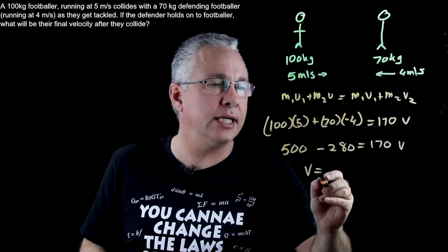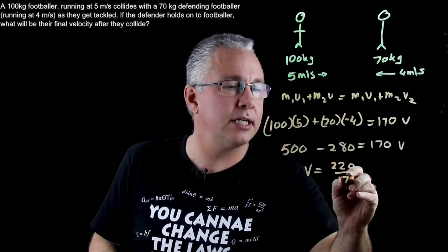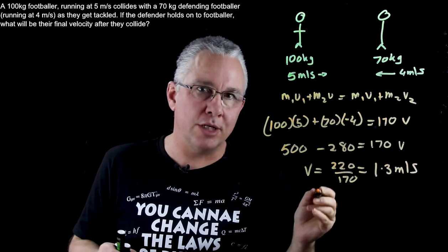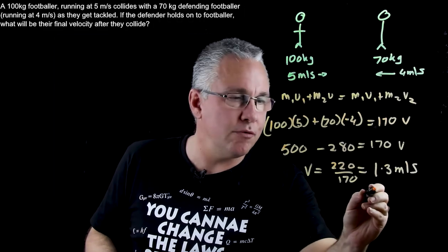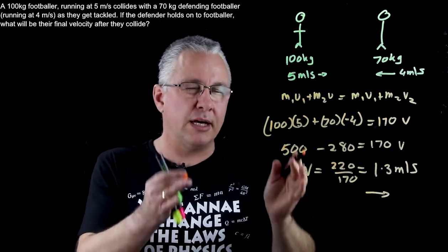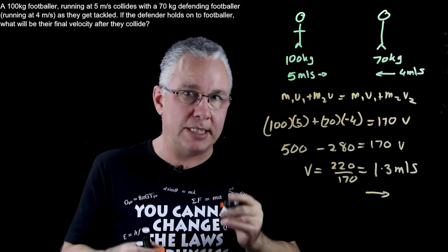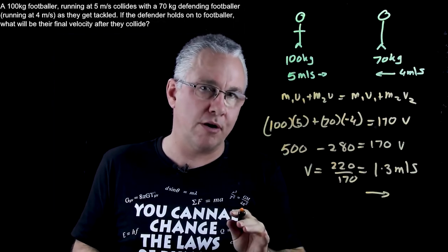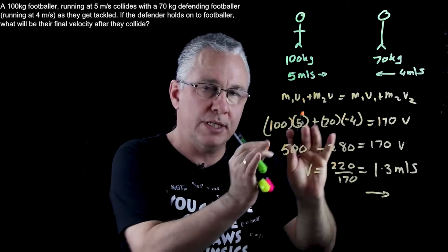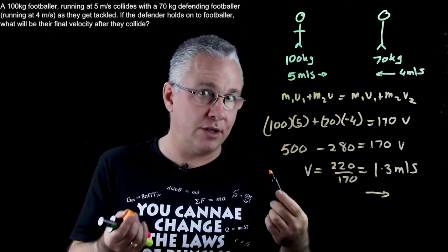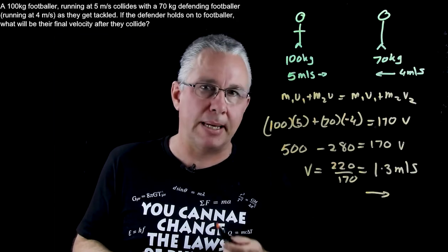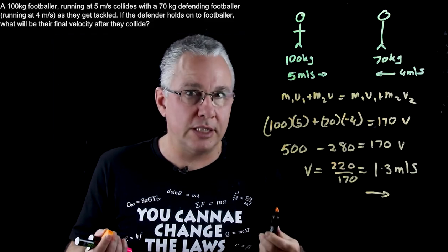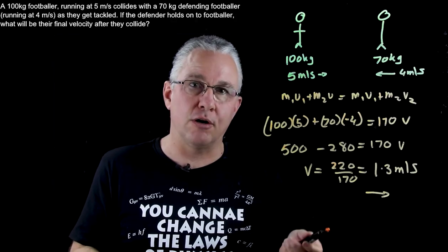So V equals 220 over 170, which gives 1.3 meters per second. Notice this is positive, meaning they're moving in that direction. That makes sense because the first person is heavier and moving at a higher velocity, so they stick together and continue moving in that direction. Don't forget to draw the arrow to show direction, because momentum and velocity are vectors — you need to state both the size and direction.